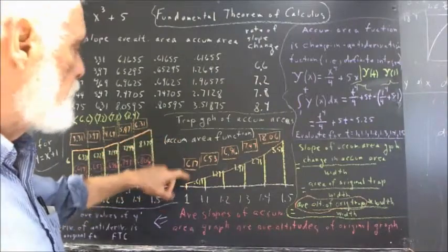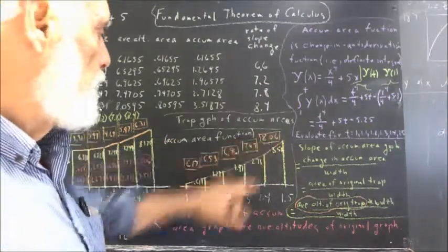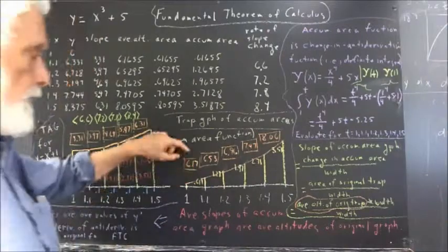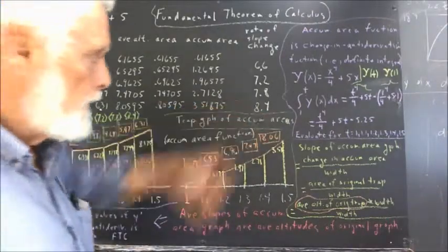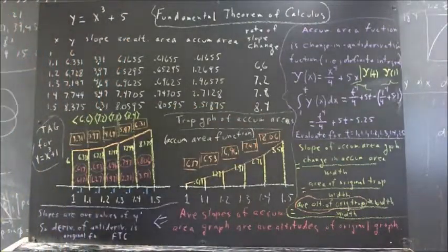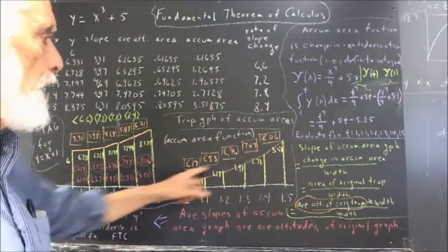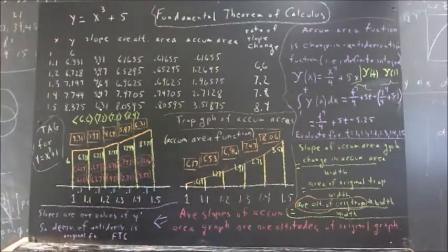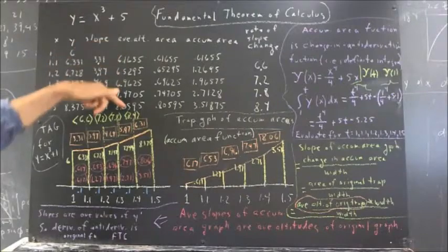What we want to look at though is the slopes of the accumulated area graph. And we calculate those. They're very easily calculated and here they are. And then we note that these slopes appear to be the same as the average altitude.